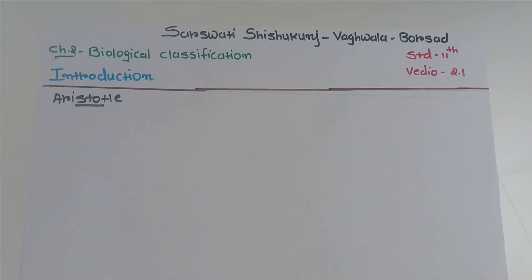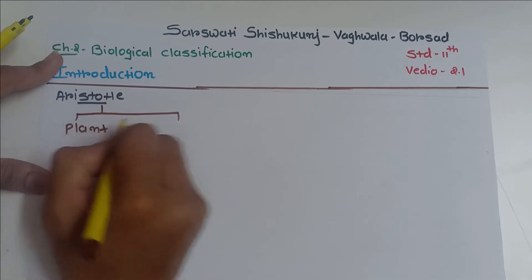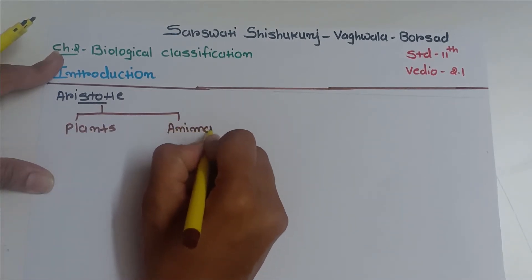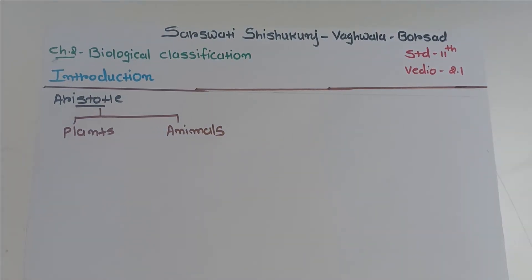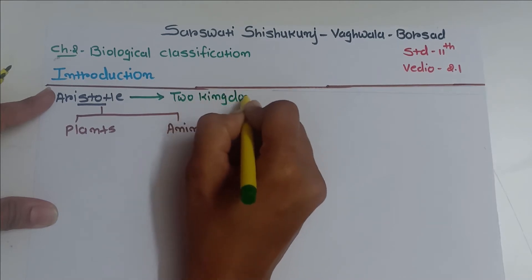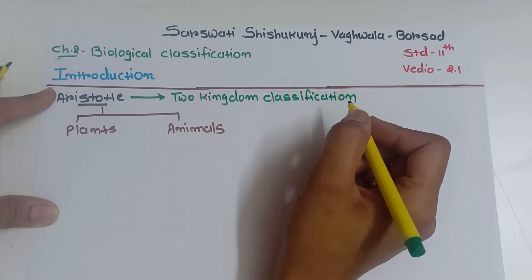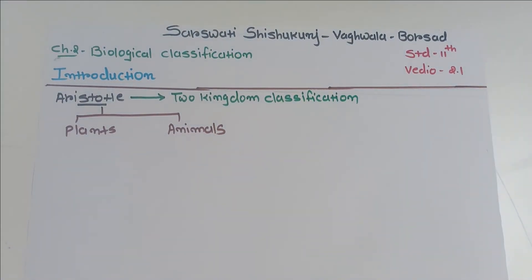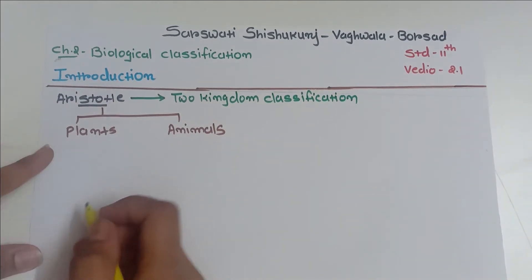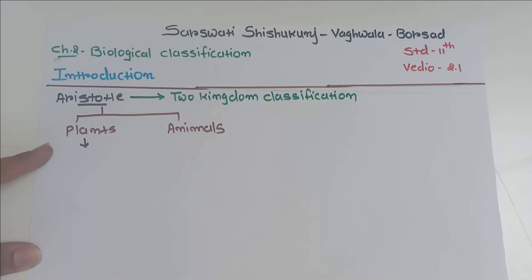Aristotle gave the first classification. He classified all living organisms into two categories: plants and animals. So basically we can say that it is a two-kingdom classification, because Aristotle divided living organisms into two main kingdoms — plants and animals.